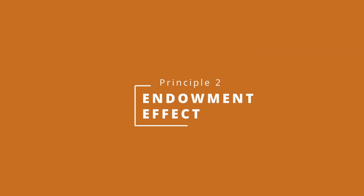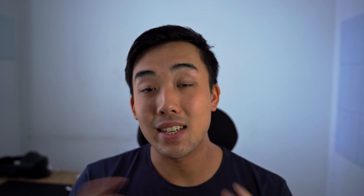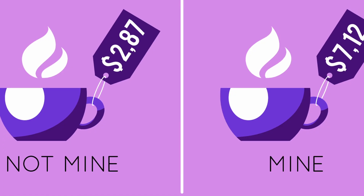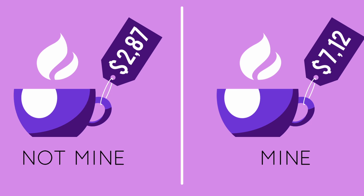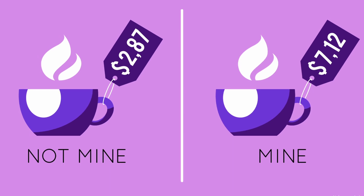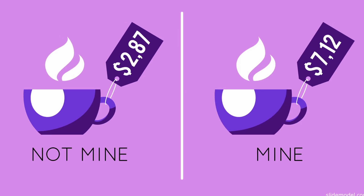The second behavioral science principle is related to the first one, and that is the endowment effect. The endowment effect is the idea that we value things that we own much more than equivalent things that we don't own. The classic study on this was conducted by Nobel Prize-winning behavioral economist Richard Thaler, the co-author of the book Nudge.